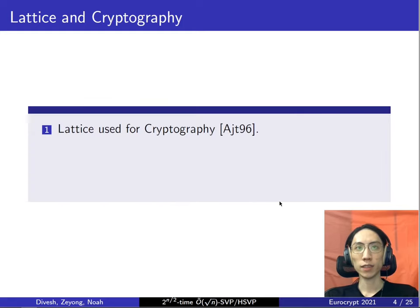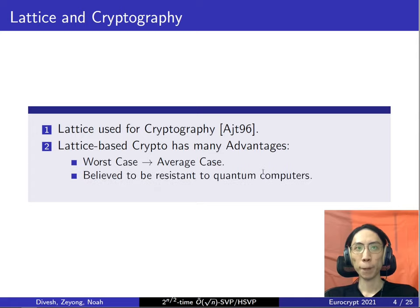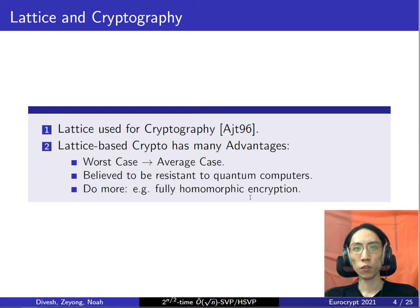Why do we study lattices? Lattices have been used for cryptography since the seminal work of Ajtai in 1996, and they have a bunch of advantages. There is a worst-case to average-case reduction, so the security of lattice-based cryptography relies on the worst-case hardness of some lattice problem. It is believed to be resistant to quantum computers and can support more advanced operations — for example, fully homomorphic encryption.